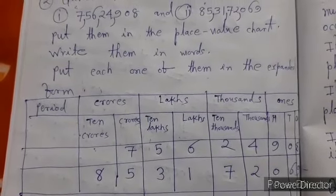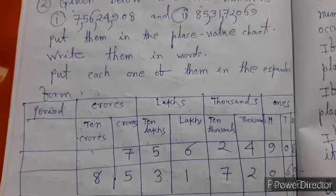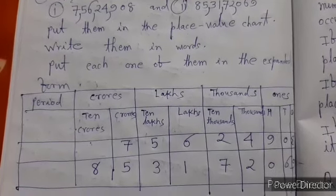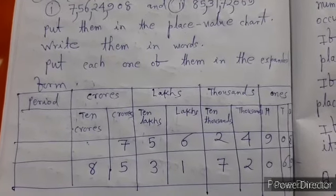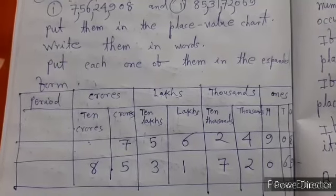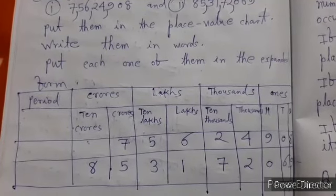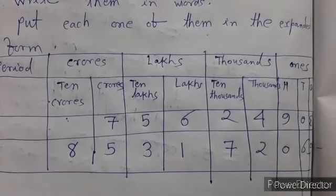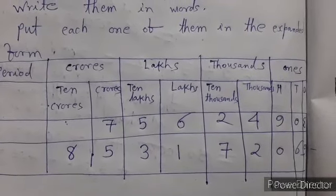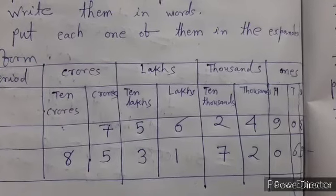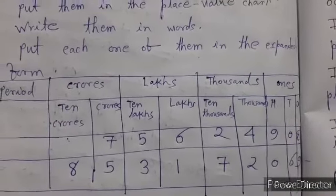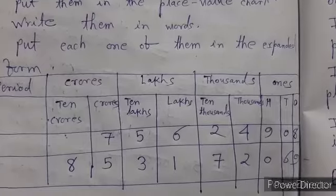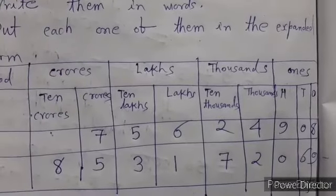To indicate these numbers in periodic chart we put them as shown. In first question we put 7 in crores period and 5 in 10 lakhs, 6 in lakhs column, 2 in 10,000 columns and 4 in 1,000 columns. We put 9 in 100 column and 0 in 10th column and 8 in ones column.